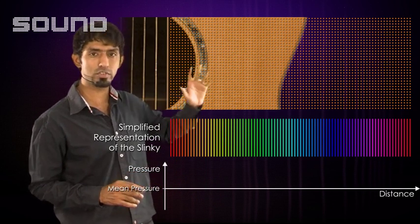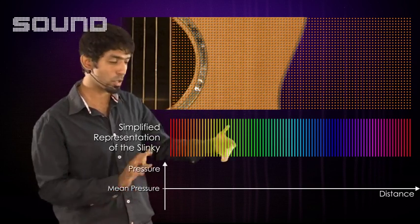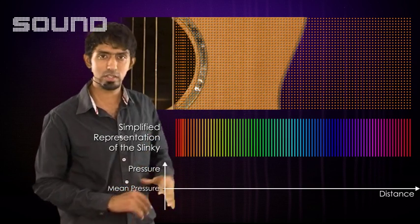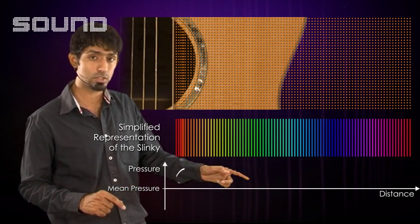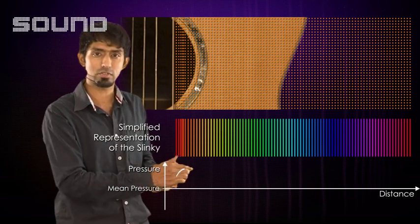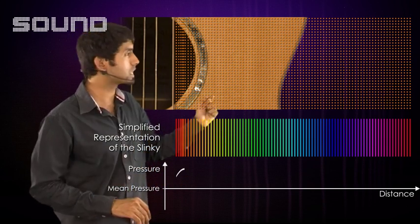The string of the guitar moves upwards, compresses air—that's equal to pushing the slinky, creating a pressure increase in the air. This is represented with a peak in the graph as you can see. So the pressure peaks and now the string will get pulled back.